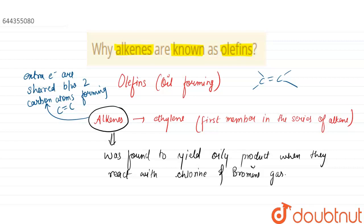So when alkenes react with chlorine gas, they automatically form an oily product. That is why they are called olefins, which means oil forming.